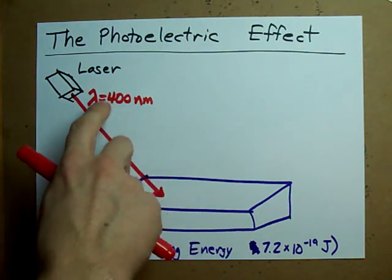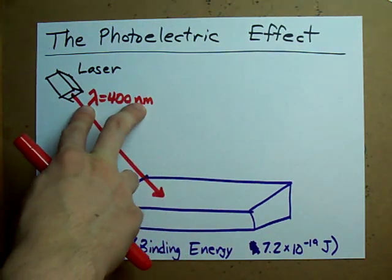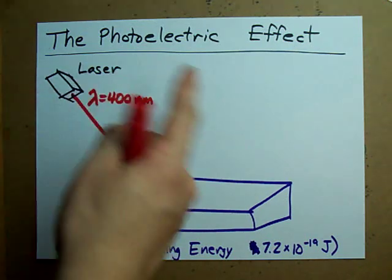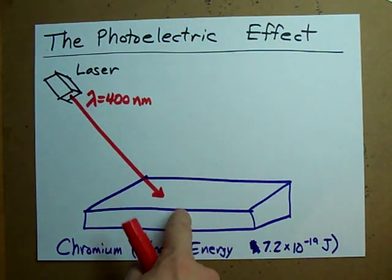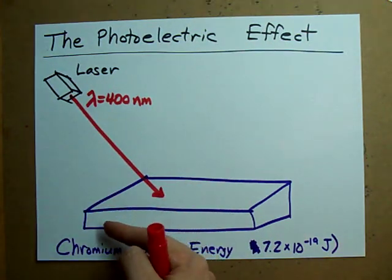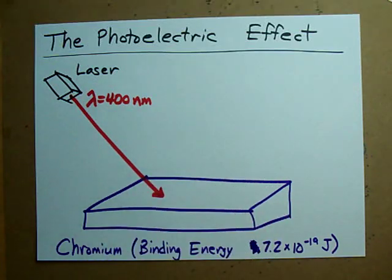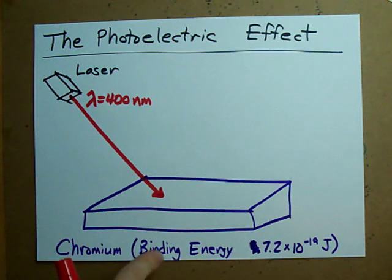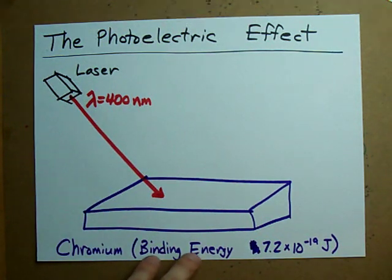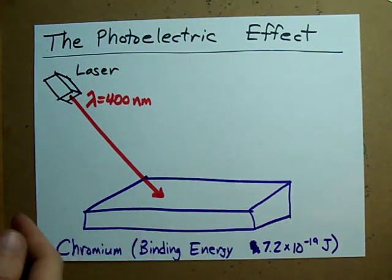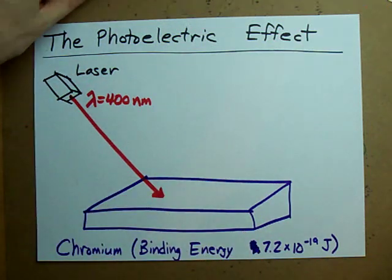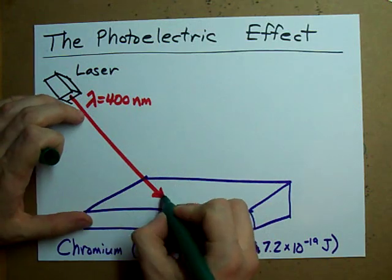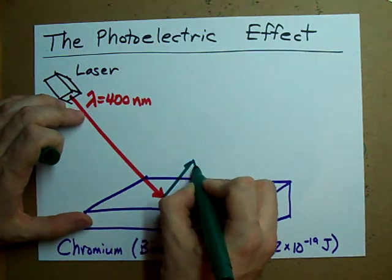In this case, whatever energy this photon has will be passed on to one of the electrons. That electron can be excited to a higher energy level. If the energy of the light is more than what's called the binding energy of the metal, then not only will the electron be excited out of the atom entirely, it will actually jump up out of the metal.